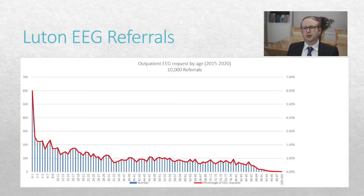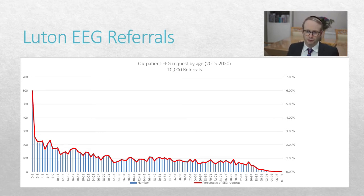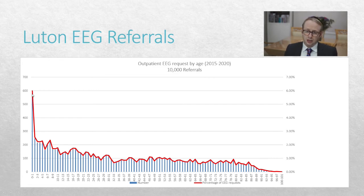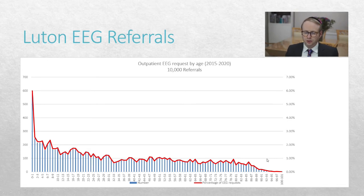Here in Luton, over the last six years, we have seen about 10,000 EEGs. And this is the distribution of them. In the blue bars, these are the absolute numbers. The red line is the percentage. You can see that six percent of our EEGs are done in the under twos, and then that sort of drops down all the way to the centenarian group. That in itself is kind of helpful, but we need to know what it is in relation to the population.